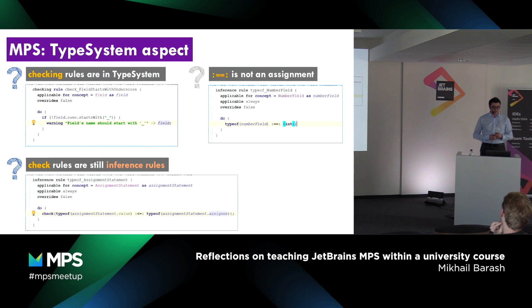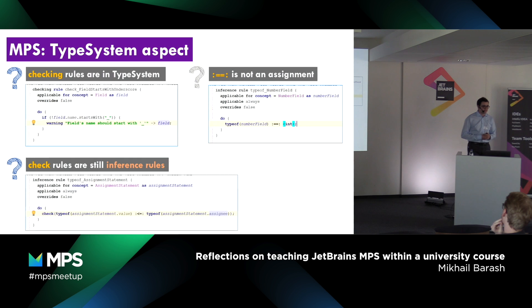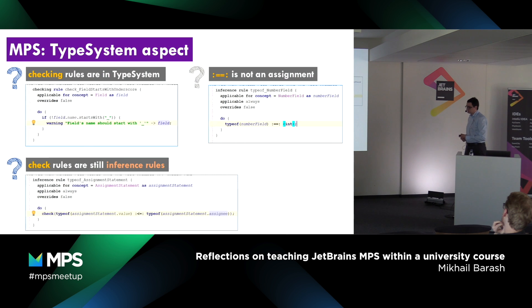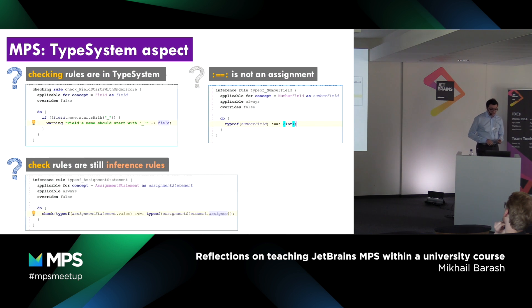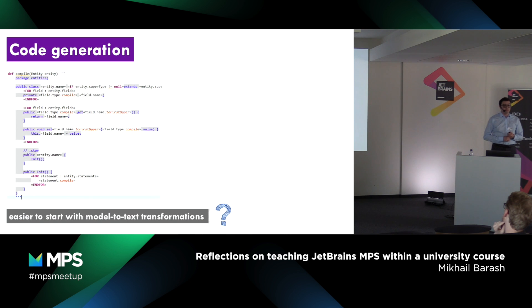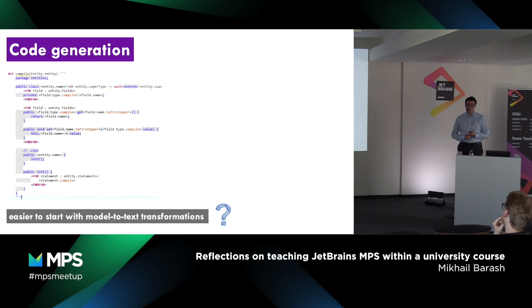More feedback from students. In the type system, checking rules are in the type system — why? That was a student question. When I explained that the type of the right-hand side of an assignment expression should be a subtype of the left-hand side, students attempted to use checking rules, but they actually needed to use an inference rule with the check modifier. One more comment on code generation: from my experience with introductory courses, it makes more sense to start with model-to-text transformations than with model-to-model transformations.